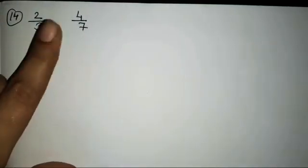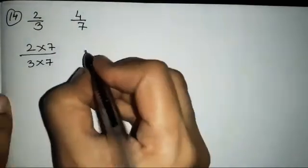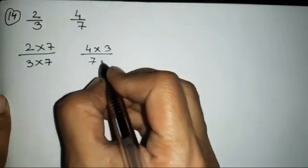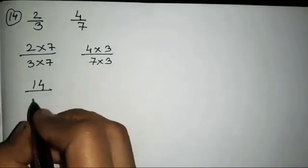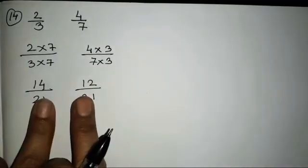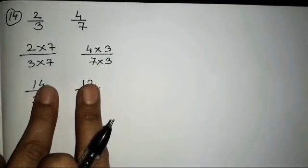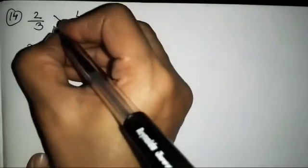The 14th sum is 2 upon 3 and 4 upon 7. Since neither 3's table gives 7 nor 7's table gives 3, we cross multiply. 2 into 7 over 3 into 7 and 4 into 3 over 7 into 3. So 7 twos are 14 over 21, and 4 threes are 12 over 21. The denominators are equalized. 14 is greater than 12, so 2/3 is greater.